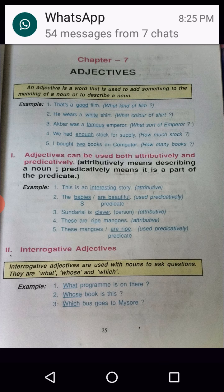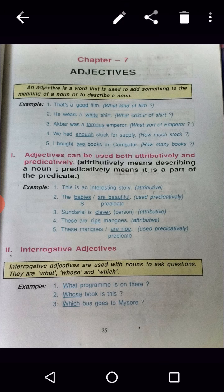Babies are the subject and beautiful is the predicate. Then, Sundar Lal is a clever person — so here 'clever' is attributive.